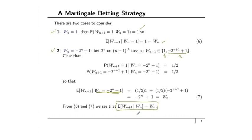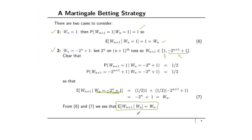This example is quite involved, but it's worthwhile introducing because it is easy to generalize to the case where you allow random bets on each play of the game. As long as those bets only depend on what you've seen up to that point, you will still get a martingale.